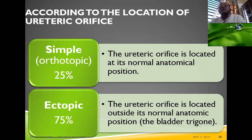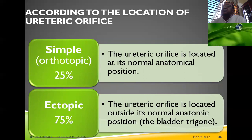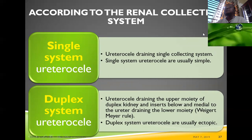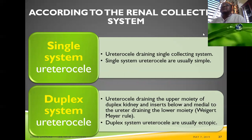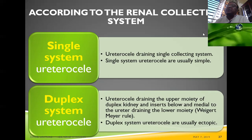According to location, simple (orthotopic) ureteroceles account for about 25% and ectopic about 75%. In simple ureteroceles, the opening is at its normal anatomical position. In ectopic ureteroceles, it is outside the normal anatomic position. Single-system ureteroceles drain a single collecting system and are usually simple. Duplex-system ureteroceles drain the upper moiety of the duplex kidney and insert below and medial to the ureter draining the lower moiety — these are usually ectopic.